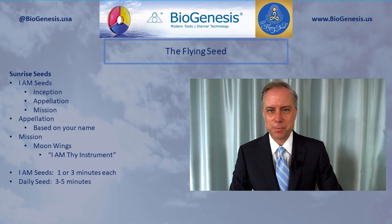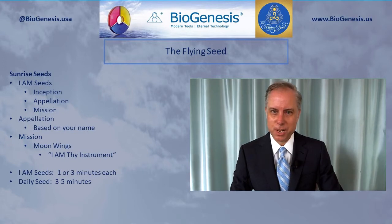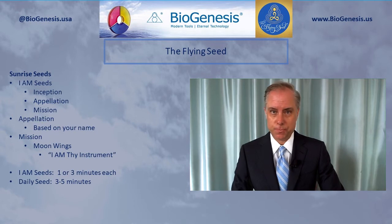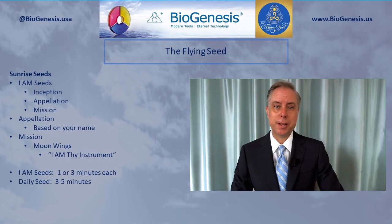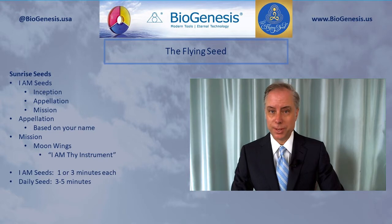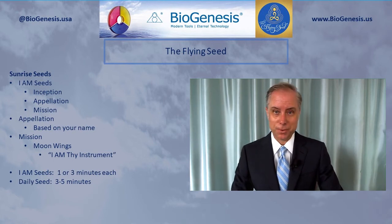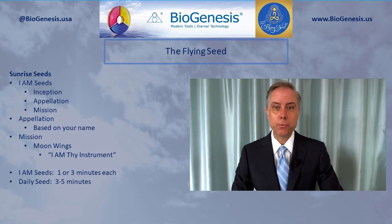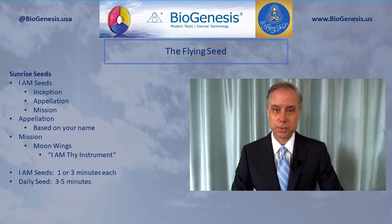We start with a brief review to make sure that everyone understands the basics of the flying seed. We have sunrise and sunset seeds. The sunrise seeds involve the I am seeds — those are inception, appellation, and mission seeds. The inception seed is based on your date, time, and location of birth; you enter that on the website. The appellation seed is based on your name. The mission seed requires the moon wings — you hold them, focus on the intent 'I am thy instrument,' let fly the moon wings four times, and that gives you your mission seed for that day.